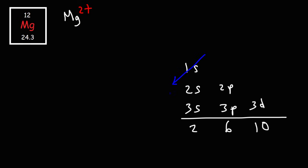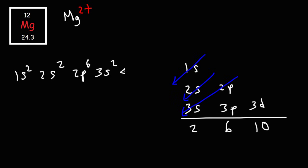Starting with 1s2, then 2s2, and then after 2s it's 2p, then 3s. So 2p6, and then 3s2. This is the electron configuration of the element magnesium.